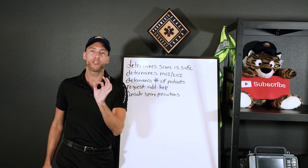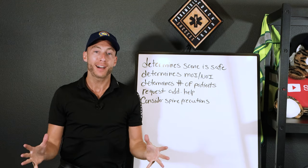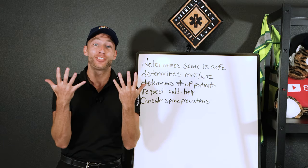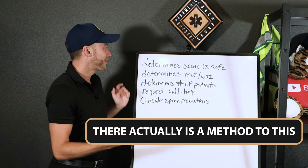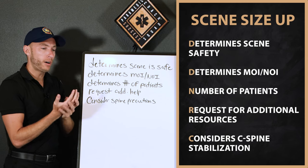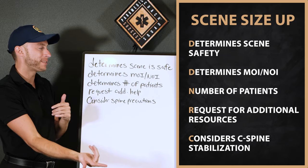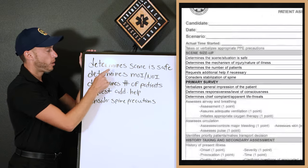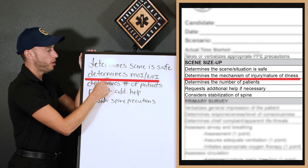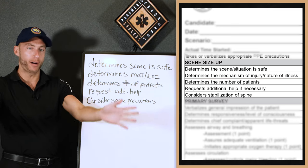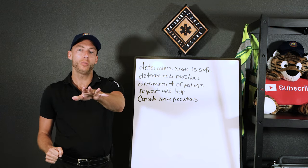The best way to go through the sheet is visualizing an actual call, because that's why the sheet was created. We get our gloves on, approach the scene — scene safe, we're cleared by dispatch, we go in. The scene size-up: first, get a point for determining the scene is safe. Next, determine the MOI or NOI from afar.